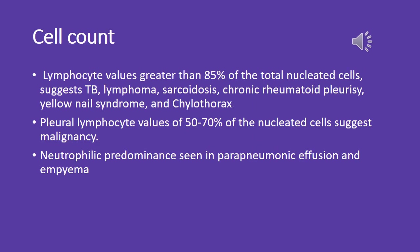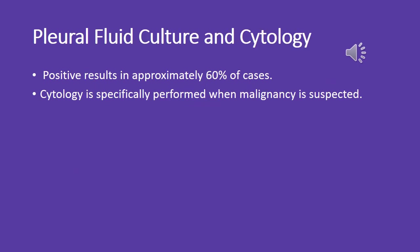Regarding cell count: lymphocyte values greater than 85% of total nucleated cells suggest TB, lymphoma, sarcoidosis, chronic rheumatoid pleurisy, yellow nail syndrome, and chylothorax. Pleural lymphocyte values of 50–70% of nucleated cells suggest malignancy. Neutrophilic predominance is seen in parapneumonic effusion and empyema. Pleural fluid culture and cytology yield positive results in approximately 60% of cases.